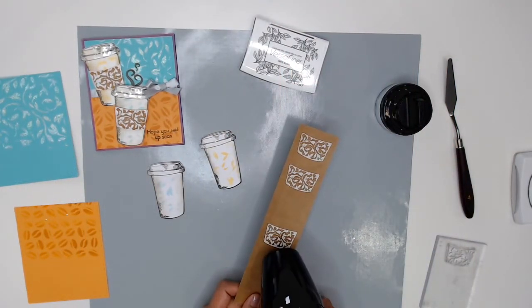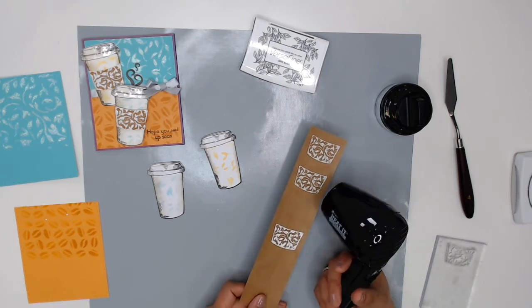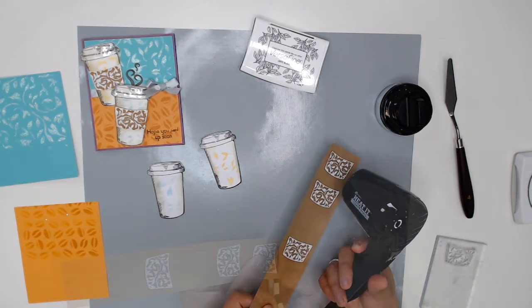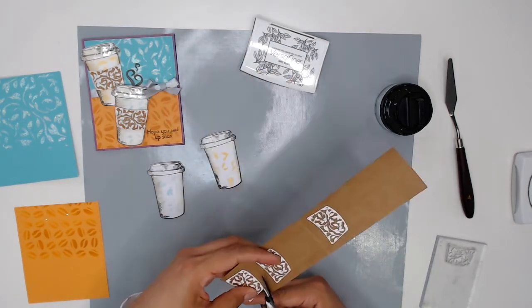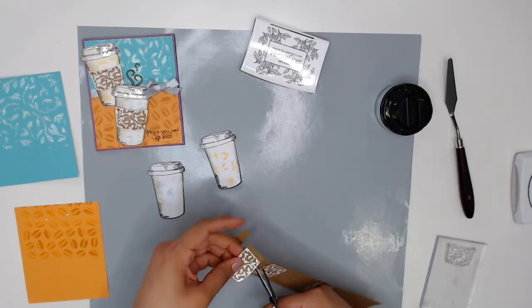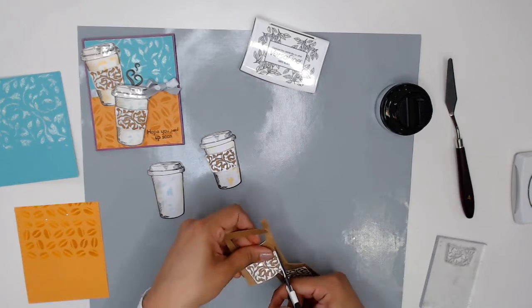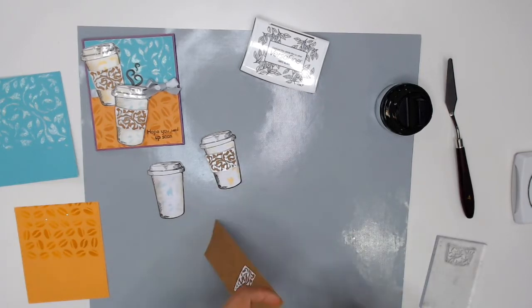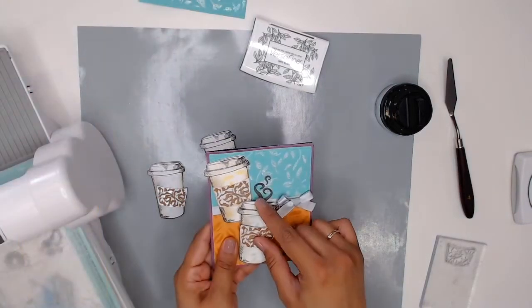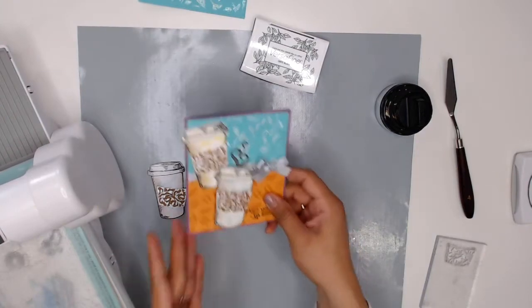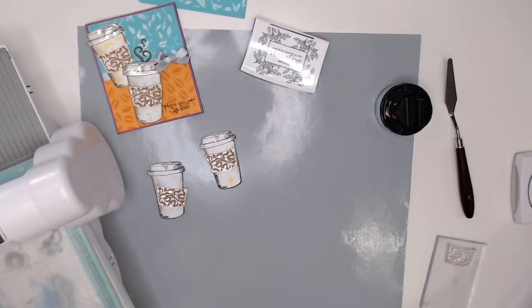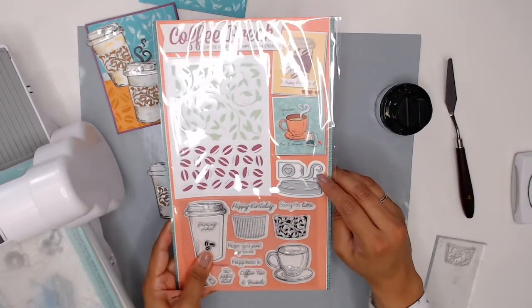Now that my embossing has cooled I'm going to cut these out and add them to my coffee cups. This tutorial is making me really want a cup of coffee. Next I'm going to die cut this steam shape out of some gray cardstock and that little steam die is right here.